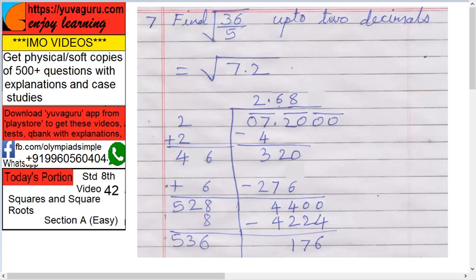Up to two decimal places means basically you have to find square root of 36 upon 5 up to two decimal places. So how do we solve this? First solve this 36 upon 5.